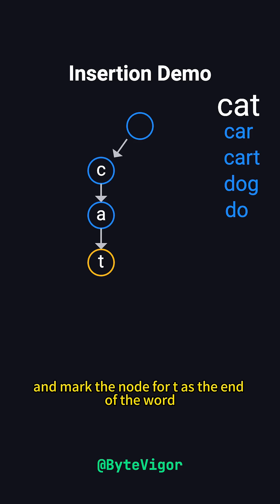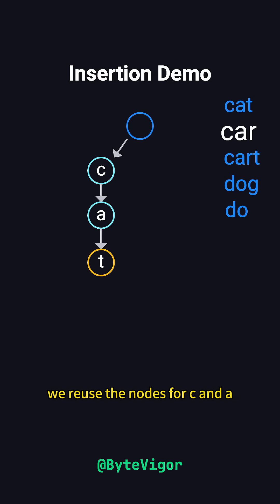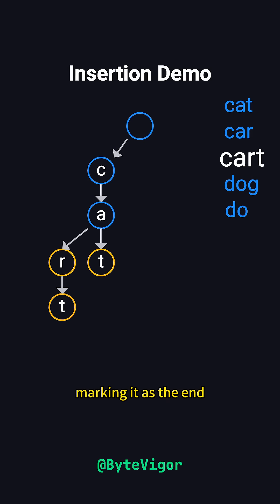For car, we reuse the nodes for c and a, add a new node for r, and mark it as the end. When adding cart, we reuse the path car and create a new node for t, marking it as the end.